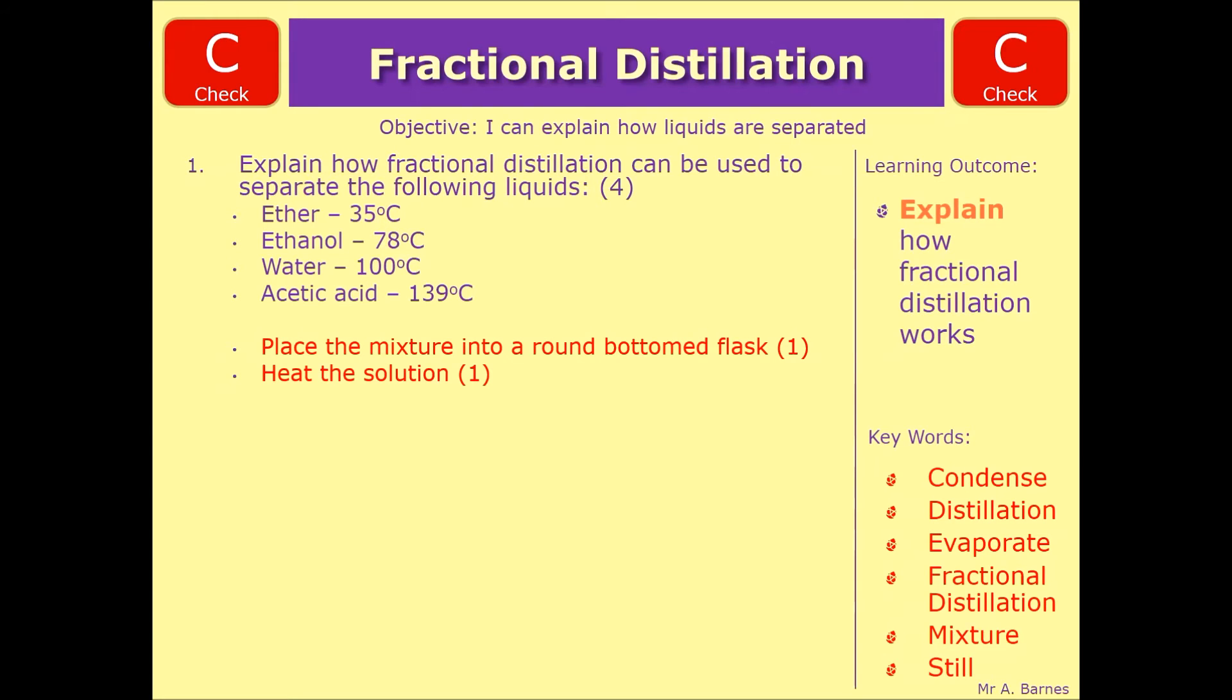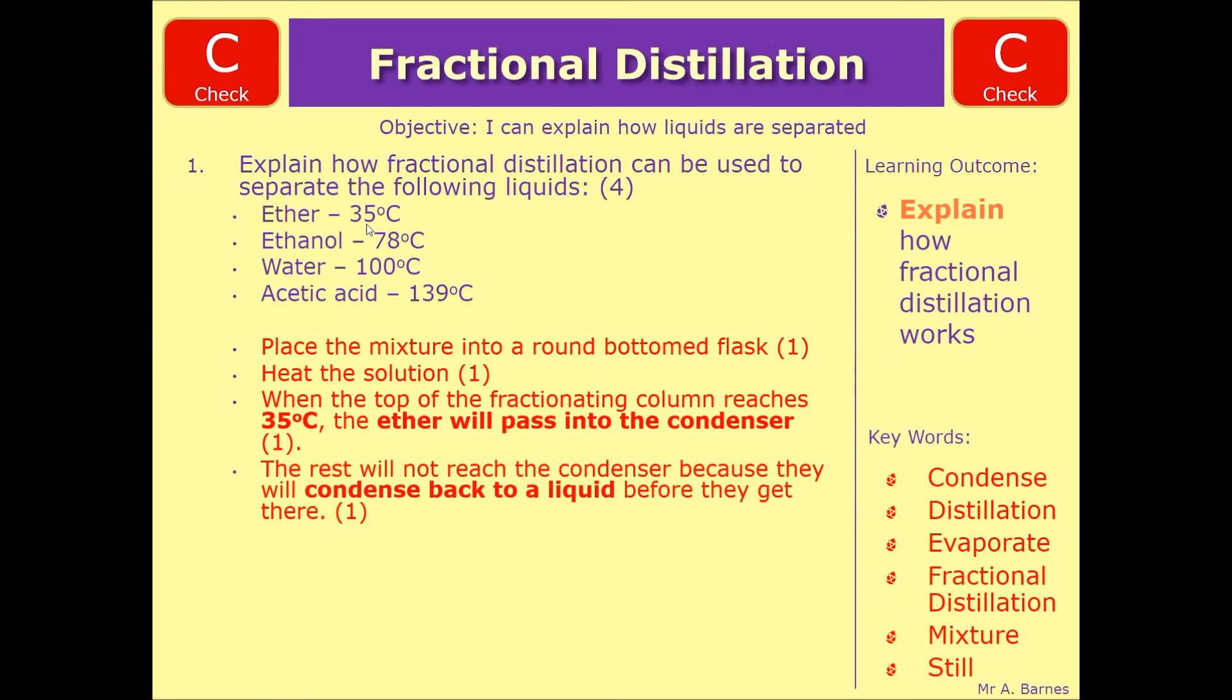The next thing that you need to be aware of is the boiling points. So you've been given those in the question and you know that ether has a boiling point of 35 degrees. That is going to be the first one that is collected. So what you're looking for is something that says that fractionating column when the top of it reaches 35 degrees the ether will pass into that condenser. Everything else will not have reached that boiling point, not have reached 78, 100, 139 degrees. So they will start to condense back down which is your next marking point.